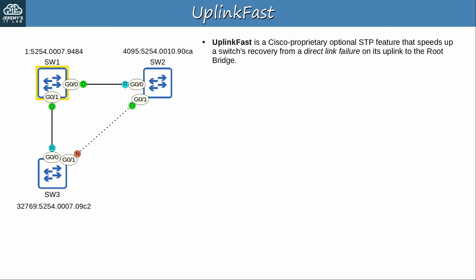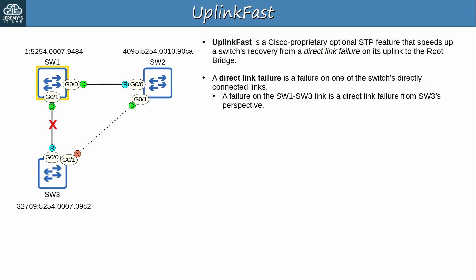UplinkFast is a Cisco proprietary optional STP feature that speeds up a switch's recovery from a direct link failure on its uplink to the root bridge. From a spanning tree perspective, an uplink is a link toward the root bridge — in other words, the root port's link. SW2's uplink is via G0/0, its root port, and SW3's uplink is also via its root port, G0/0. A direct link failure is a failure on one of the switch's directly connected links. For example, a failure on the SW1–SW3 link is a direct link failure from SW3's perspective.